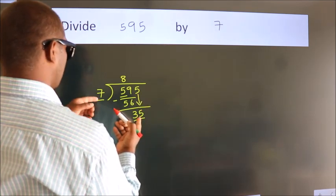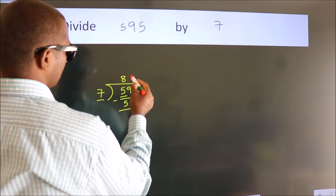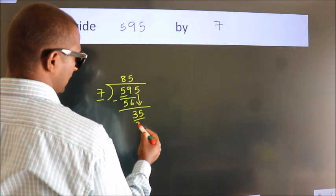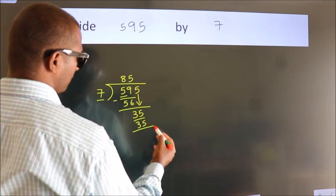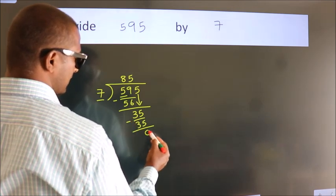When do we get 35 in the 7 table? 7 times 5 is 35. Now we subtract and get 0.